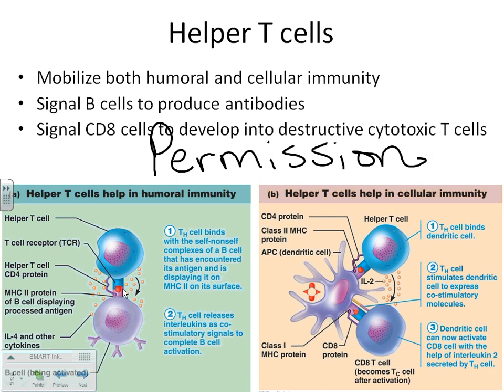Here's our helper T cell coming over and binding to a B cell. What do we know a B cell does when exposed to antigen? It makes antibodies through several steps. When the B cell gets ready to do that, it finds the antigen, then shows the antigen it has to the TH and says, 'Do I have your permission to make my antibodies?' The TH looks at it and says 'Yes, you're good to go — this is an antigen we need to be fighting.' The TH cell gives the B cell permission to make the antibodies.